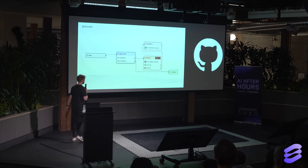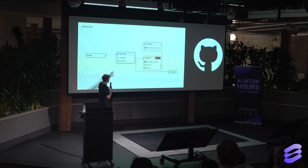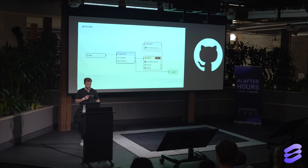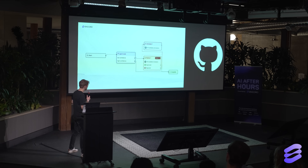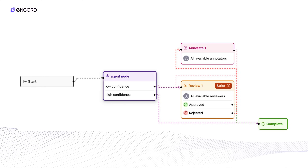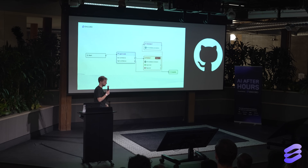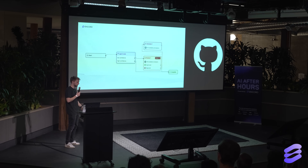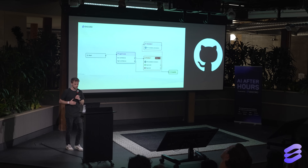Wouldn't it be nice if you could do something like this instead? What if you had this purple agent — a piece of software that can do most of the tasks for you? It takes your data, whether images or text, does some magic, and only once in a while sends it to review so a human can double-check. Otherwise it just sends it to complete so you can start training — running on Ray, training your model tomorrow rather than in three months when the humans are done.